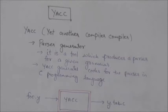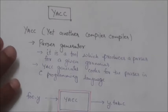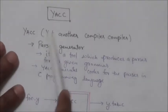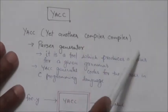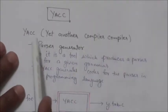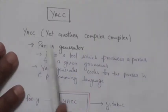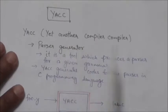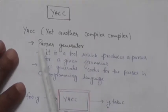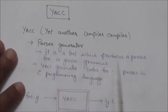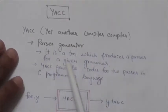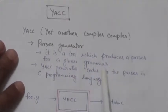Hello friends, welcome back. In this tutorial we will study about the YACC tool. The full form of YACC is Yet Another Compiler Compiler. This YACC tool is a parser generator — it is a tool which produces a parser for a given grammar.